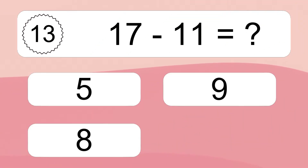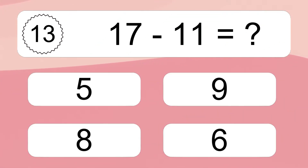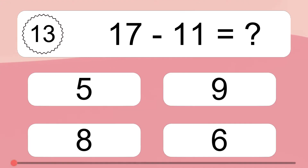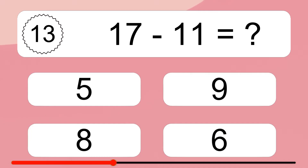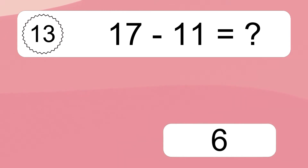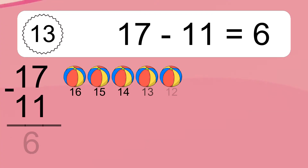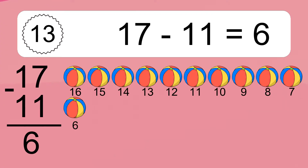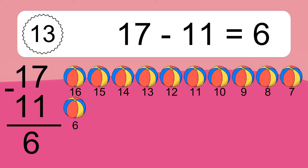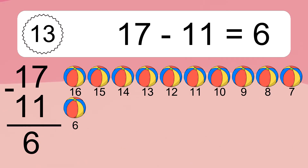17 minus 11 equals what? 17 minus 11 equals 6. Let's count it: 16, 15, 14, 13, 12, 11, 10, 9, 8, 7, 6.